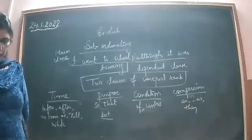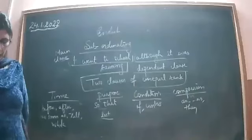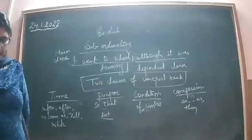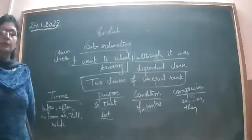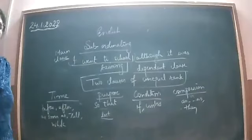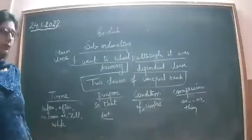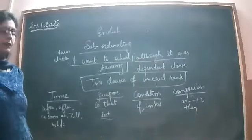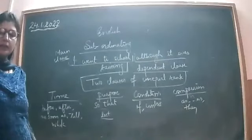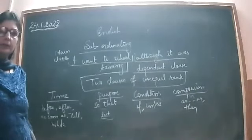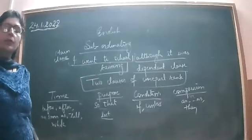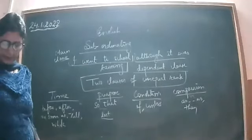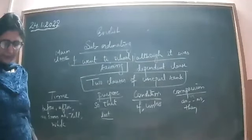First sentence: 'They arrived after we had left.' — 'After' is a single conjunction. Second: 'The children were so noisy that I could not sleep.' — 'so...that' is a correlative conjunction. Third: 'Neither money nor property is more important than life.' — 'Neither...nor' is correlative.